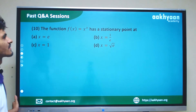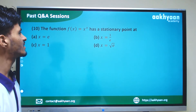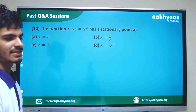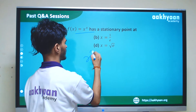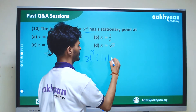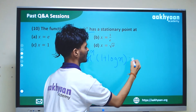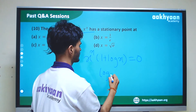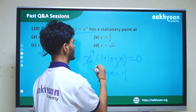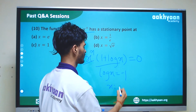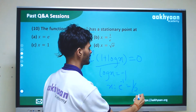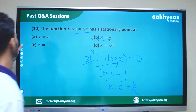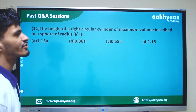In the next problem, the function f(x) = x^x has a stationary point. The derivative is x^x (1 + log x). Setting the derivative equal to zero: 1 + log x = 0, so log x = −1, giving x = 1/e.